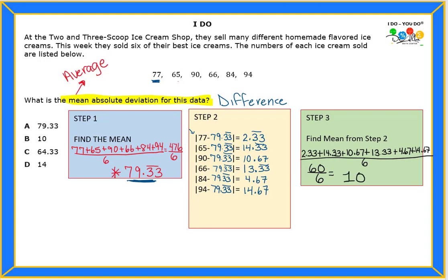And guess what, that is the answer, which is letter B, very good. So quite a few steps but as long as you remember that step one you find the average, step two you find the difference which means subtracting, and step three you need to find the average again.